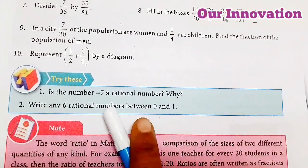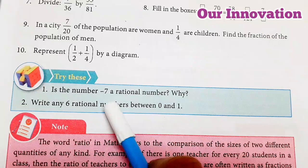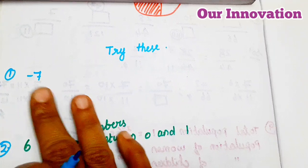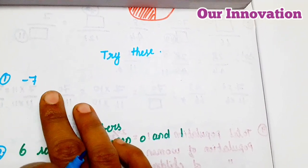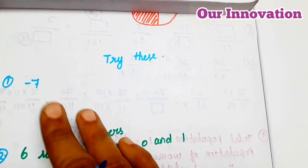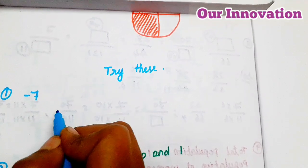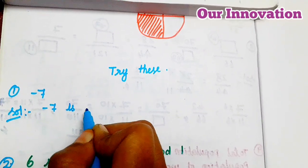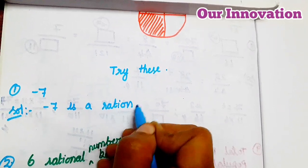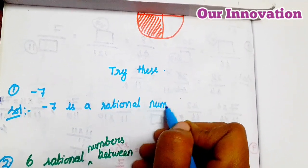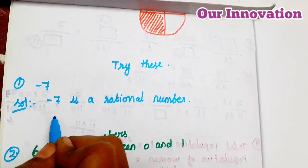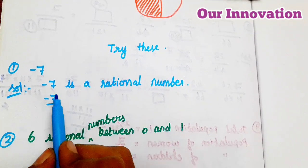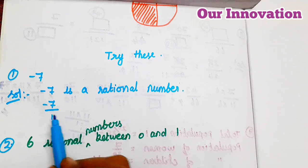Try this: is the number minus 7 a rational number? Yes, this is a rational number. Minus 7 is a rational number because minus 7 can be written as −7/1. This is an integer above and below, so it is a rational number. Equivalent rational numbers: multiply numerator and denominator by 2 to get −14/2.